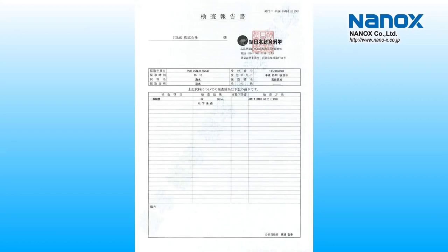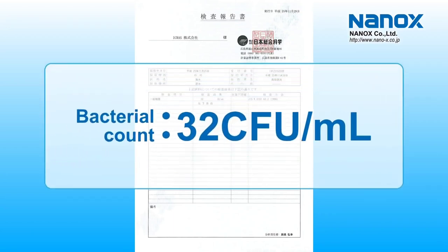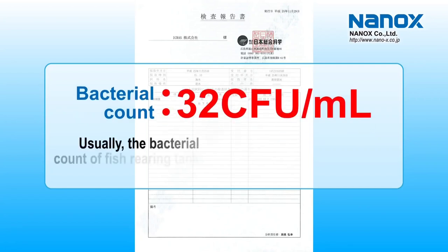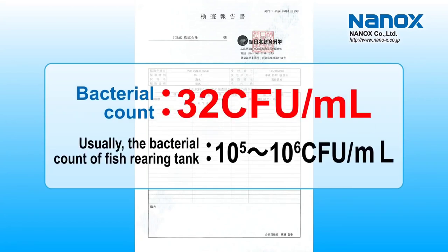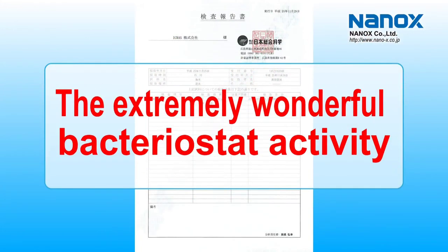This table shows the results of bacteriological examination in CFU (Colony Forming Units) of the rearing tank at Itkulasu Company using oxygen UFB. The bacterial count in the rearing tank is limited to only 32 CFU, which is very scarce. Usually, the bacterial count of a fish rearing tank attains 10 to the 5th or 6th power CFU. This clearly demonstrates that UFB has extremely effective bacteriostatic activity.